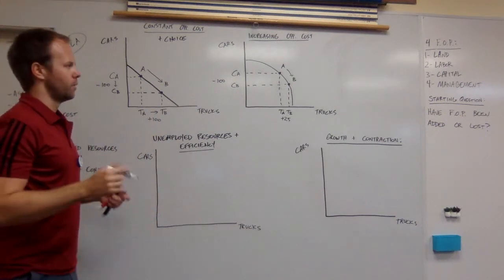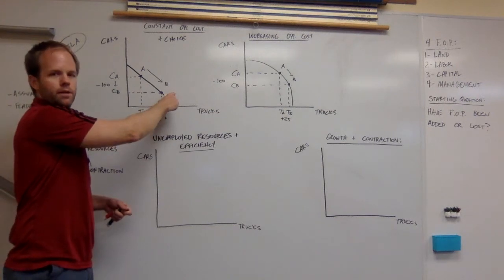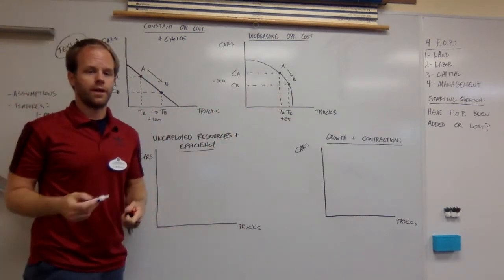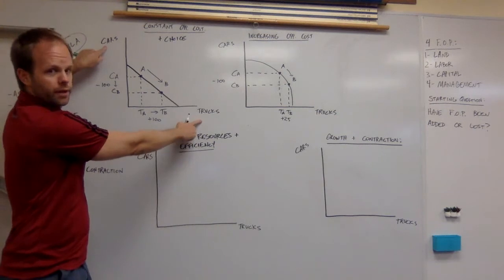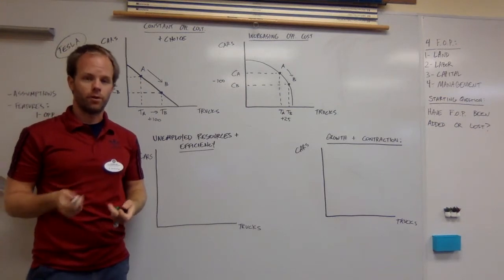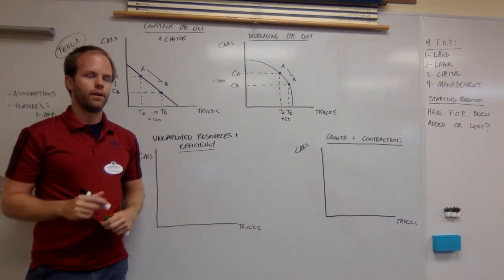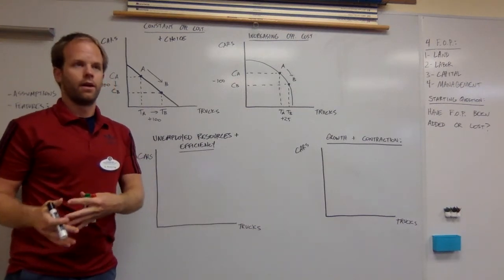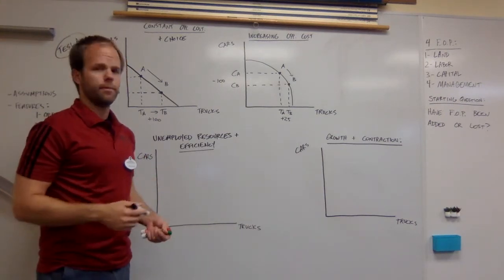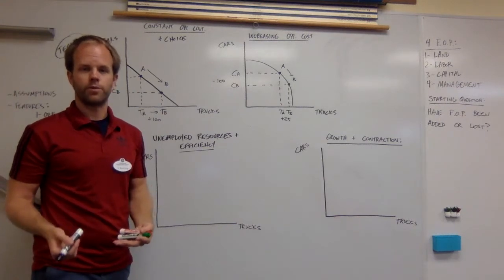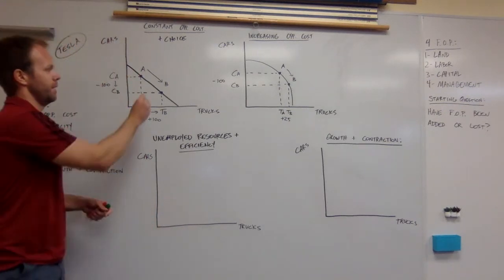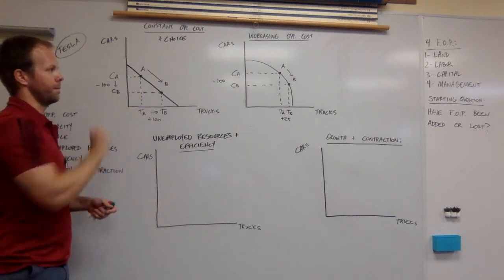You might be asking yourself, why would a business have a PPC that is a straight line, or why would a business have a PPC that is a curve? The answer to that depends on how similar are these two things. For example, an iPad and an iPhone are nearly the same product. An iPad is basically a bigger version of an iPhone. In terms of the materials that you need, the software that's running for those things, it's pretty much the same. In that case, you might have a constant opportunity cost.